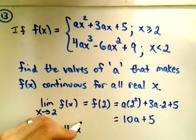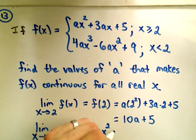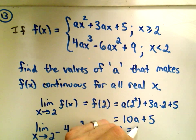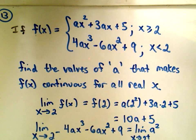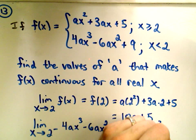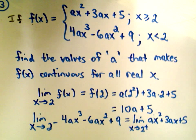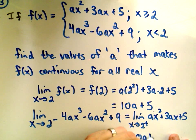And if we look at the limit as x approaches 2 from the right, we're just going to be looking at the first piece, the ax squared plus 3ax plus 5. And we've really already computed this second limit. That's where we get our 10a plus 5.